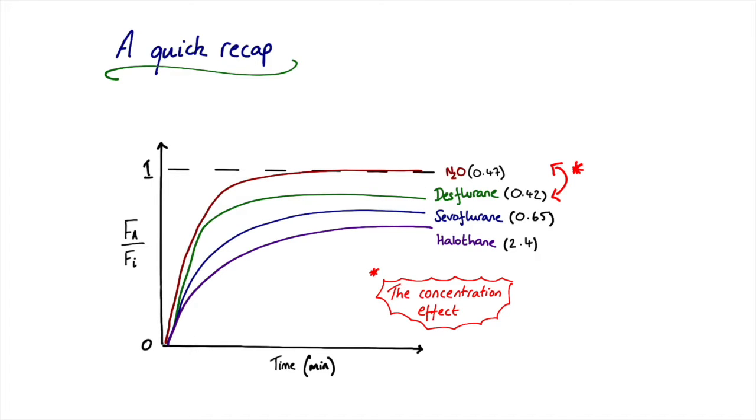The one that bucked the trend on this was nitrous, where despite having a larger blood gas partition coefficient at 0.47, it still had faster onset than desflurane at 0.42. And we said that this difference, this going against the trend, was a consequence of the concentration effect.